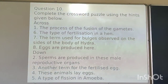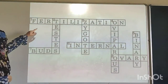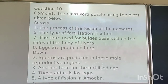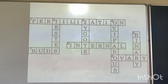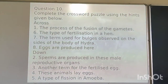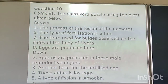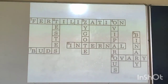Moving to the next answers: the second clue refers to smaller particles — that is sperm. Third, the fertilized egg that is not yet developed — that is zygote. Animals that lay eggs — that is oviparous. A type of fission in Amoeba — that is binary fission.